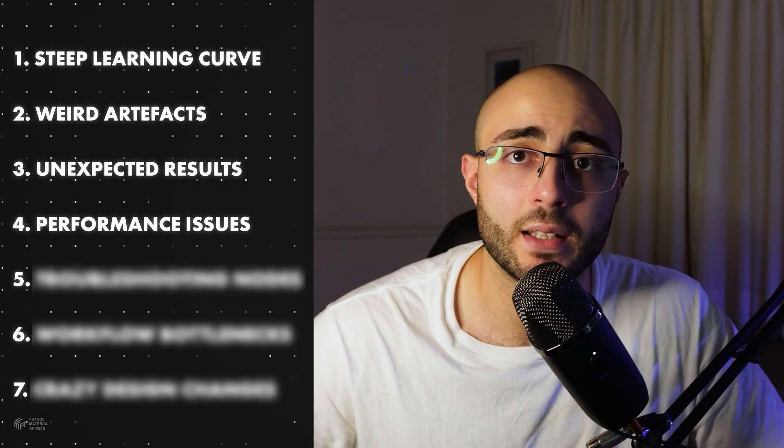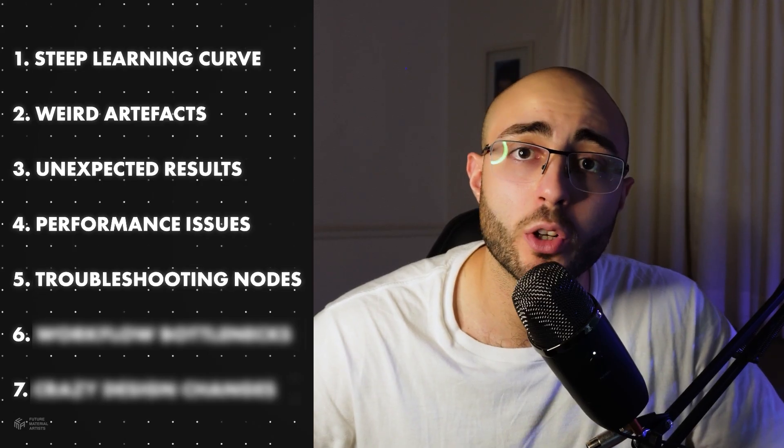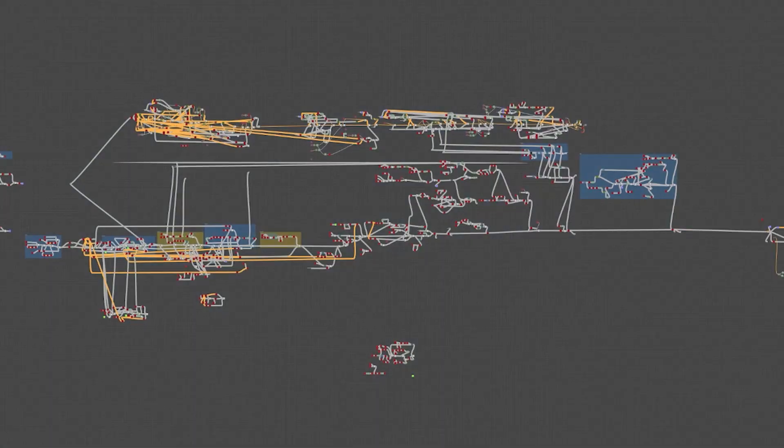Problem number five might be the most frustrating of all: troubleshooting your nodes to find where you have a glitch. While working in Substance Designer, you start to see in your outcome that there are issues generated by choosing wrong noises or a combination of nodes that don't look good. Your graph looks like a mess, and these are artifacts you created without knowing it because you didn't have the right experience — and now they're ruining your work and you don't know how to find them.